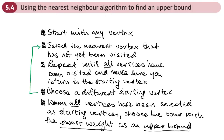Here's the algorithm. First of all, we start with any vertex. Then we select the nearest vertex that has not yet been visited — we'd probably use a distance table to do this. Then we repeat until all vertices have been visited, and we need to make sure that we return to the starting vertex. Then we choose a different starting vertex and repeat this process again. We'll have lots of different tours through the network with different weights. When all vertices have been selected as starting points — starting at A finishing at A, starting at B finishing at B, and so on — we choose the tour with the lowest weight as an upper bound.